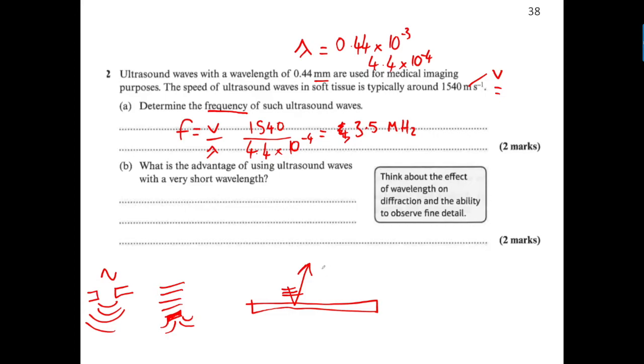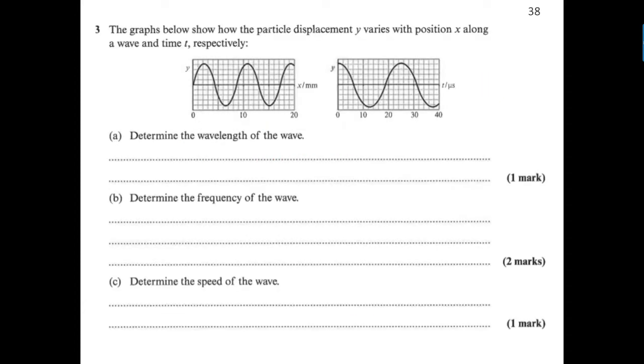By having a very short wavelength, you reduce diffraction effects and increase sharpness and resolution. The graphs show how particle displacement y varies with position x along a wave and time respectively. These graphs look similar, but this is distance and this is time. One measures wavelength and one measures time. To determine wavelength, we use this graph.